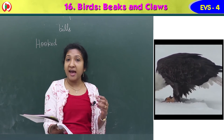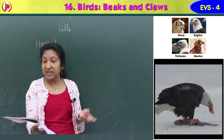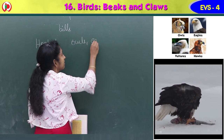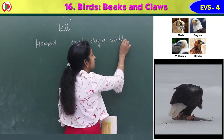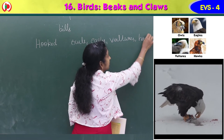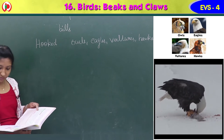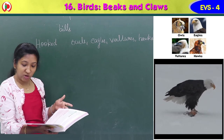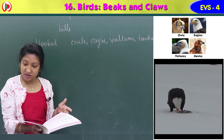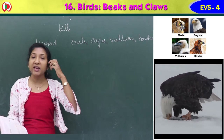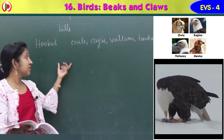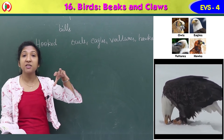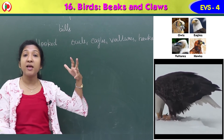Owls, eagles, vultures, and hawks all have hooked beaks. They use this beak to catch and tear the prey. Prey means an animal that is hunted and killed for food. With this hooked beak, they bite or tear the food and break it into small pieces to eat.